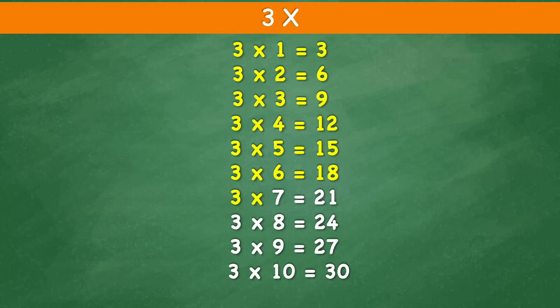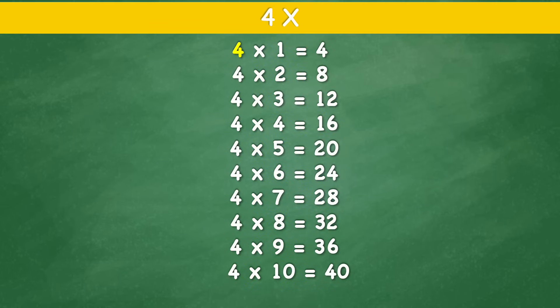3 times 7 equals 21. 3 times 8 equals 24. 3 times 9 equals 27. 3 times 10 equals 30. 4 times 1 equals 4.